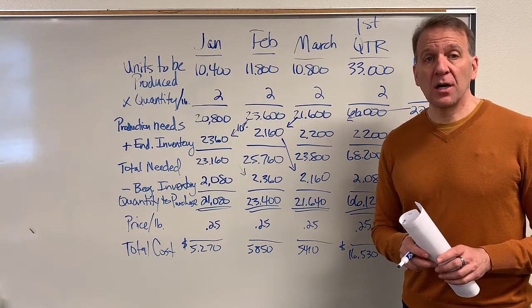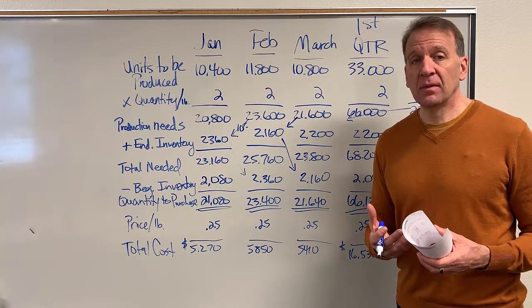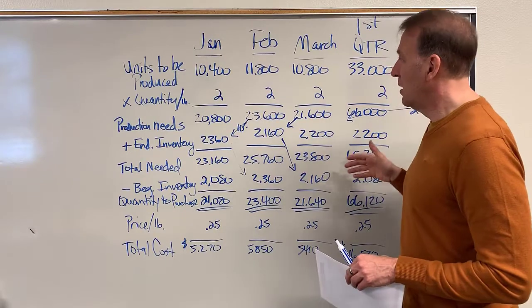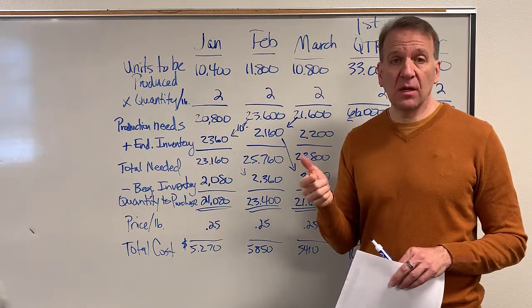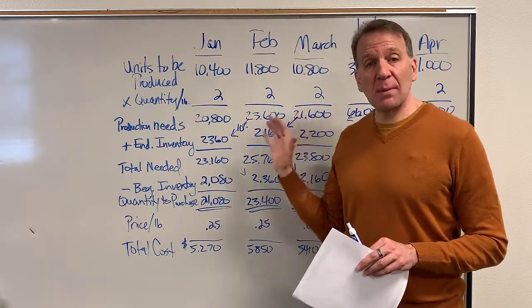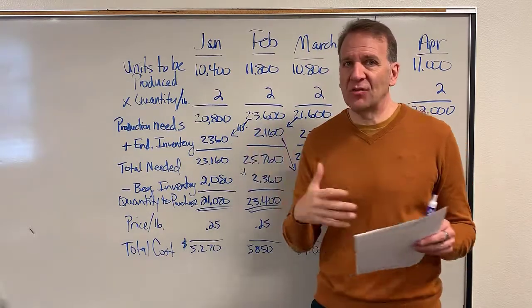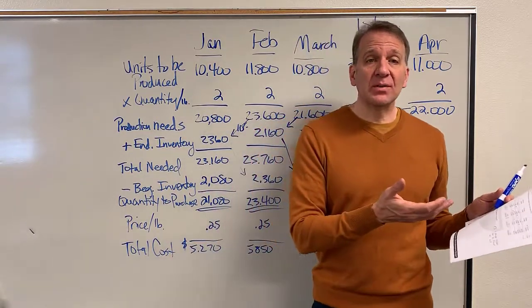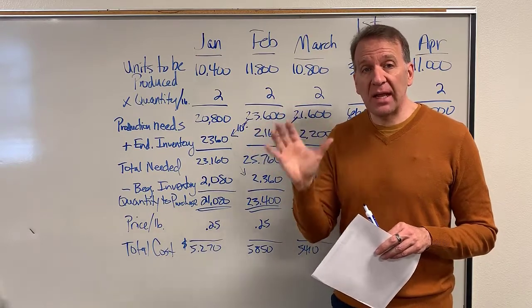So this is our direct materials budget. It makes sense — spend some time thinking about what we're doing here. It follows the production budget very closely. The first step is to convert units into the direct material, which in our case is potatoes. Now if your product has other materials, you need to do a separate direct materials budget for each one — for example, an oil budget or a salt budget for potato chips.